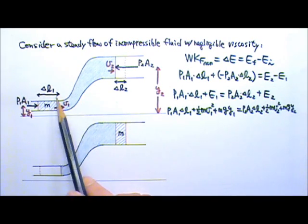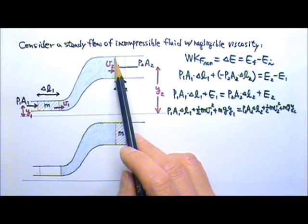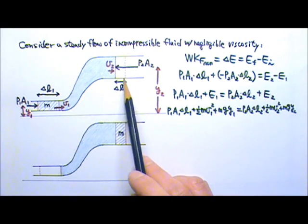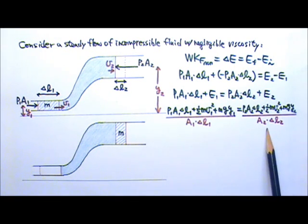So A1 times delta L1 should equal the volume over here, which is A2 times delta L2.